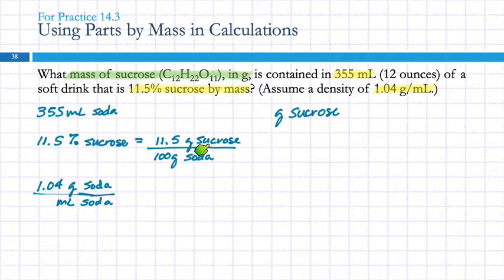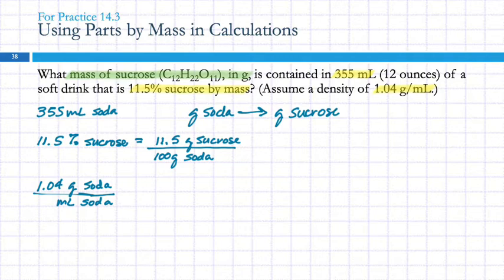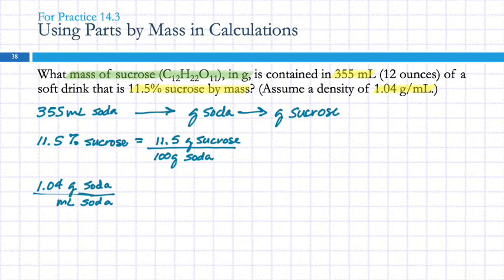Starting with milliliters of soda, we are trying to get to grams of sucrose. The trick is how do we get there. We'll need to use the two conversion factors we're given. This one has grams of sucrose in it — it relates grams of sucrose to grams of soda. So if I had grams of soda, I could convert that to grams of sucrose. How do we get from milliliters of soda to grams of soda? Density — here we have grams of soda and milliliters of soda. So I have my path: milliliters of soda → grams of soda → grams of sucrose.